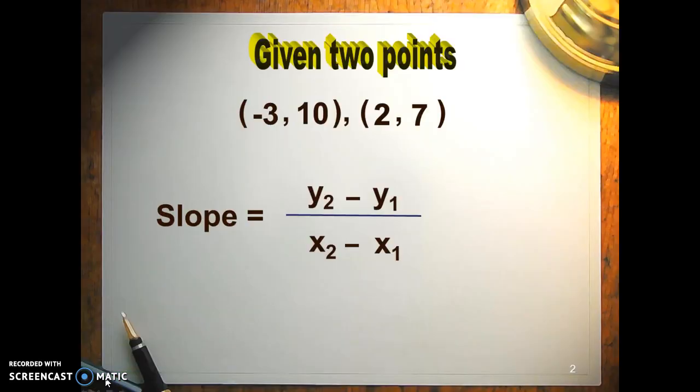First of all, let's take a look at the slope given two points. You have to find the slope by using the formula y2 minus y1 over x2 minus x1. First, let's locate what that means. The second y and the first y, we're going to subtract back, and we get 7 minus 10.